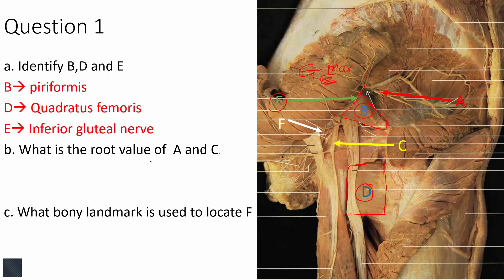Structure A is a nerve emerging from the suprapiriformic compartment, sandwiched between two muscles: K, which is gluteus medius, and M, which is gluteus minimus. The nerve running in that intermuscular plane is the superior gluteal nerve, which supplies those two muscles. If you said the root value is L4, L5, and S1, that is correct.